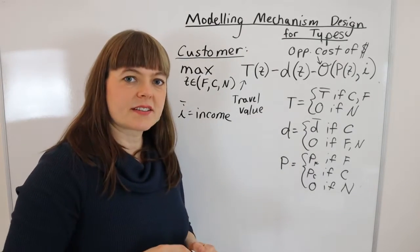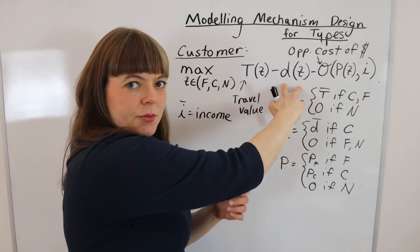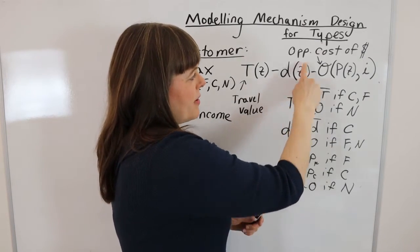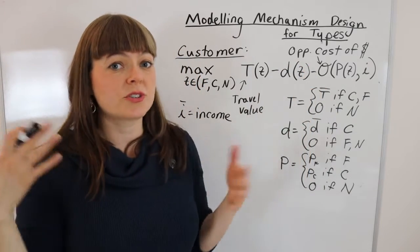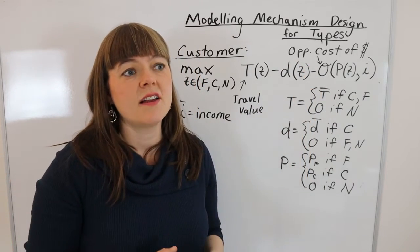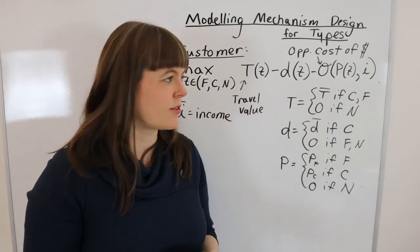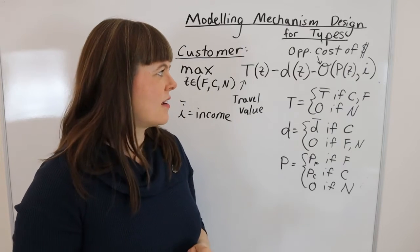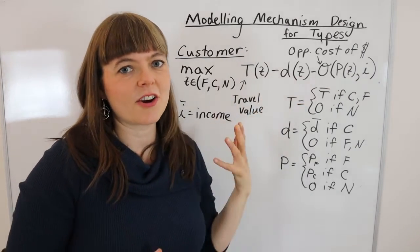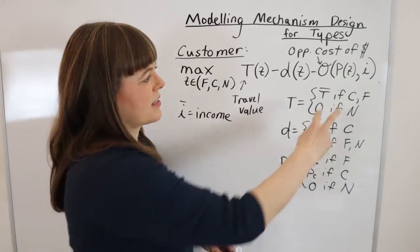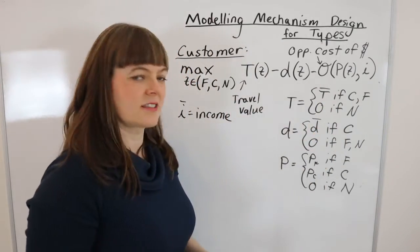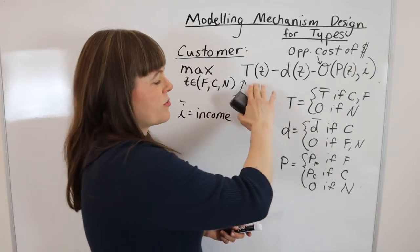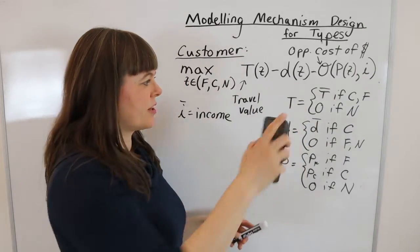I've set it up so that opportunity cost — what you give up by buying the ticket — depends on the price you pay (which depends on which ticket you choose) and on your income. I've now built type in as a continuous variable that affects one part of the problem. I also want to note that income could go inside the discomfort term too — rich people used to a luxurious lifestyle might find coach far more uncomfortable — but I'll keep the model simple and leave income only in the opportunity cost. The next step is to write out an incentive compatibility constraint for this model.